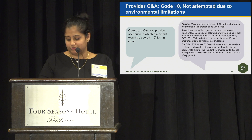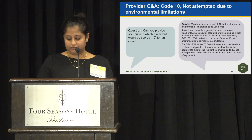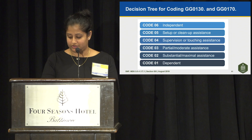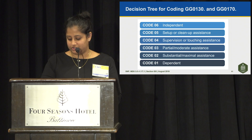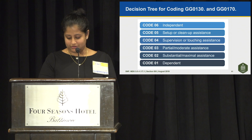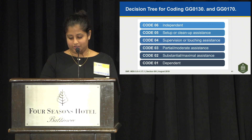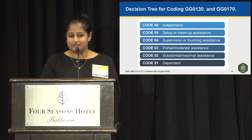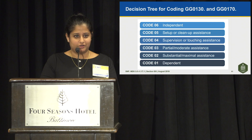We're going to review each coding option in the six-point scale in greater detail, walking through the decision tree for coding GG0130 self-care and GG0170 mobility, highlighting each coding level using the example of resident Mrs. Jones completing GG0170D sit to stand. The decision tree presents a series of yes/no questions represented by diamonds that guide you to the correct code. I recommend having the decision tree out as we go through the practice scenarios.